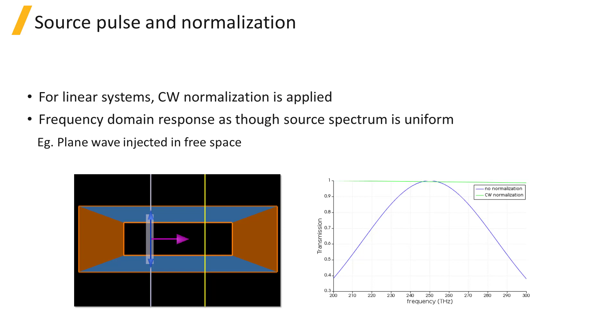You may recall that the source pulse and normalization were covered previously in the CW normalization section of this course. CW, or continuous wave normalization, is used for linear systems to obtain the frequency response as though the spectrum of the source is uniform.